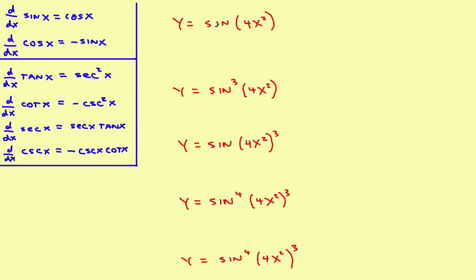Now watch this one. We're going to sometimes square the trig function, and sometimes cube it, and sometimes cube the argument — watch each one of these. On this one, the derivative would be: the derivative of the sine is the cosine. Then rewrite the original inner part, then times the derivative of what's on the inside, which is 8x, and you are done.